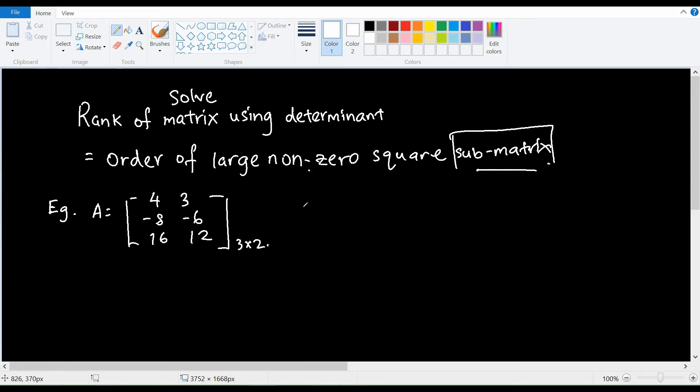So first thing first, what we will always do is solve with a smaller dimension of the square matrix, which in this case I will focus on the 1 by 1 square submatrix of A. So in matrix A, we have 6 submatrices. The condition is that if at least one of the submatrix has non-zero value,